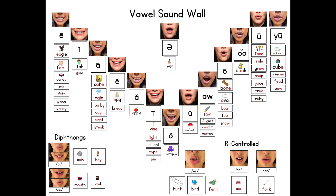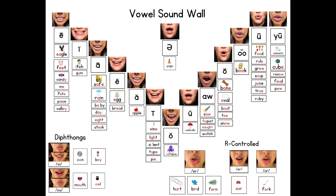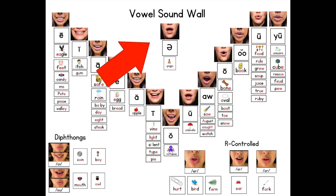Then you will move back up the vowel sound wall. You will notice that the mouth will round out as it reaches the U. Diphthongs and controlled and schwa vowel sounds are placed around the vowel valley.